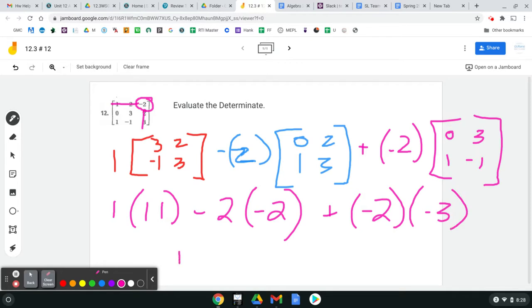All right, let's see what we did, so we get 11, plus four, plus six. So 21.